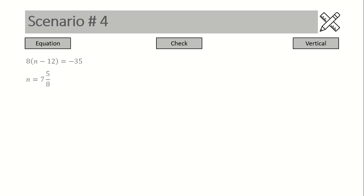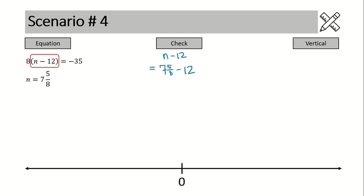Now onto scenario number four. Inside the brackets we have n minus 12. Substituting, we have a positive mixed number — seven and five-eighths — and we're subtracting 12. On the number line, we start at seven and five-eighths, subtract 12, and cross from the positive domain into the negative domain. You want the term with the larger number in front, so we switch the terms — bringing the negative 12 term out front.